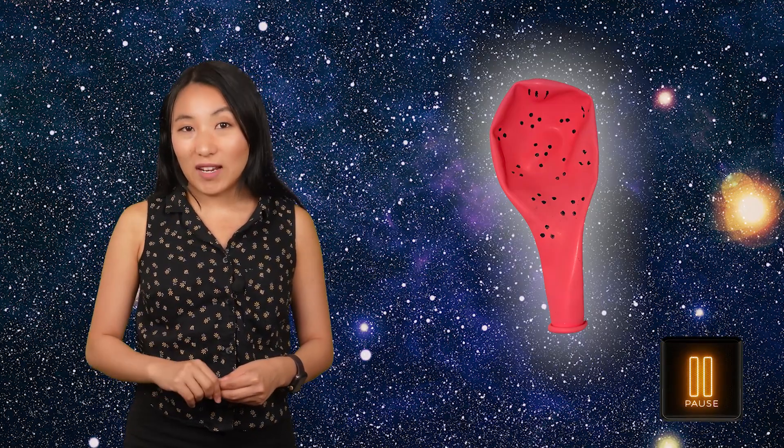Let's start building our model of the expanding universe. Take one of your balloons and your marker. Before inflating the balloon, draw many small dots scattered across its surface. These dots represent galaxies in the universe. You can decide how you want the galaxies to be spread out in your mini universe. But remember that galaxies in the real universe don't spread out evenly, so you might want to make a few clusters of galaxies on your balloon surface. Pause the video here and get your first balloon ready.